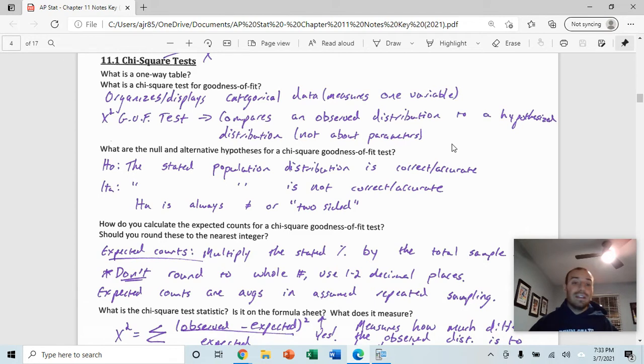When we're writing the null and the alternative hypotheses for chi-squared goodness of fit test, the easiest way to write them is in sentences and saying something like the stated population distribution is correct or is accurate as your null hypothesis. And your alternative is always a two-sided kind of thought process there and saying that the stated population distribution is not correct or not accurate.